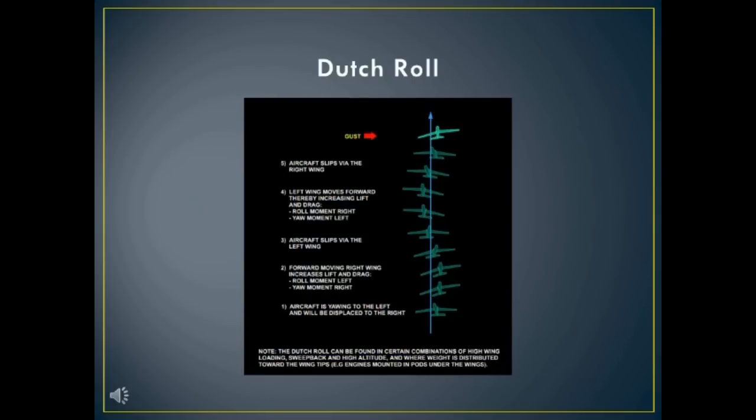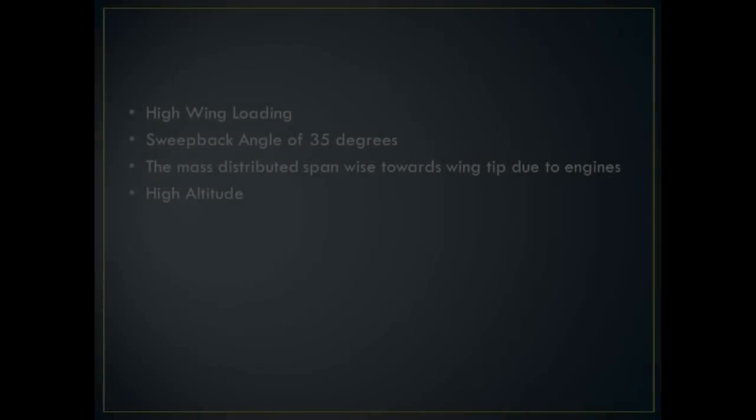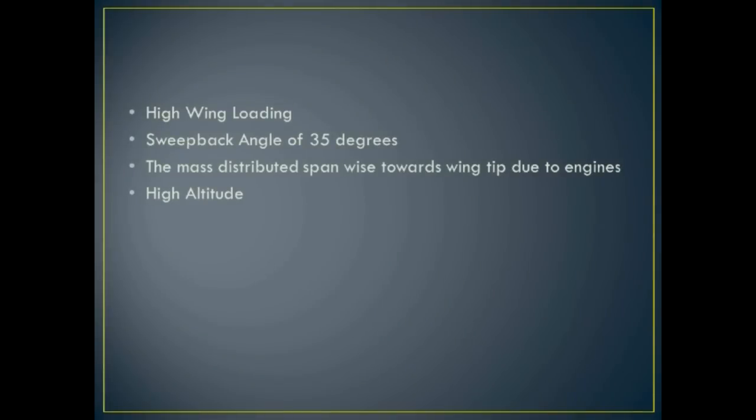Dutch roll is an oscillation in Yaw and roll. Usually, it is exhibited by passenger aircraft which generally have four factors. The first factor is higher wing loading. The second factor is they have a sweep-back angle of 35 degrees.